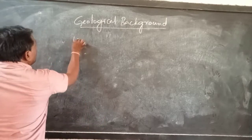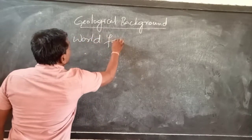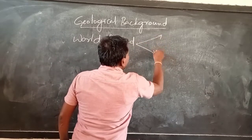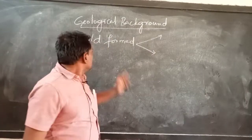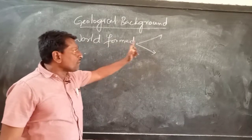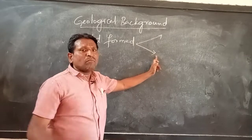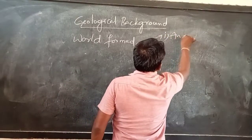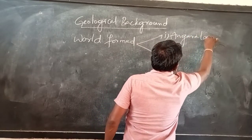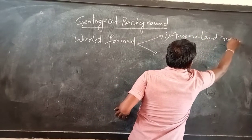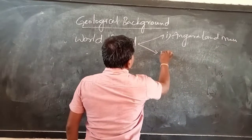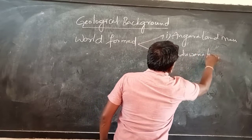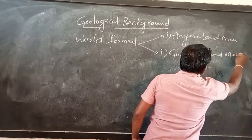The world was formed from two main land masses. One is called the Angara land mass and the second one is called the Gondwana land mass.